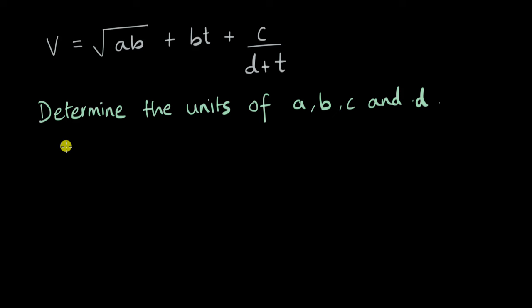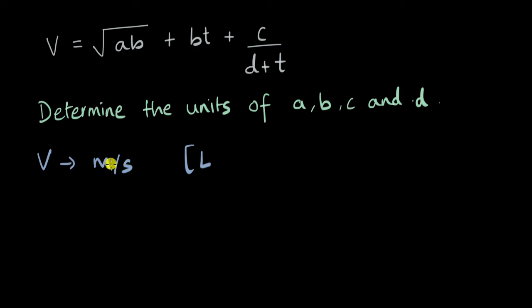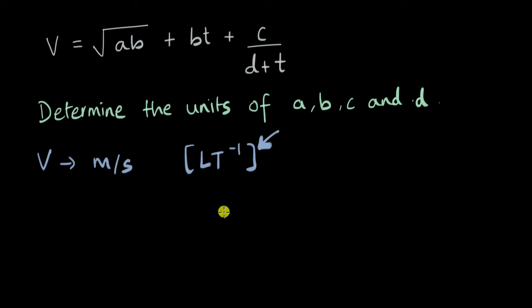The unit of velocity is meters per second. If we write it in the form of dimensions, this will be L T⁻¹, where L is for meters and T⁻¹ because seconds is in the denominator. Now all of these quantities — √(ab), bt, c, d plus t — individually will also have this particular dimension.